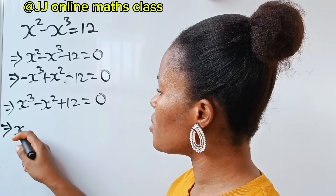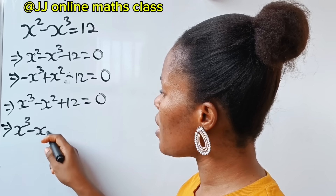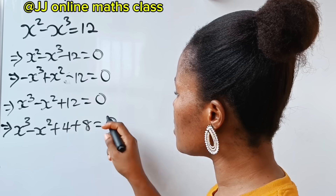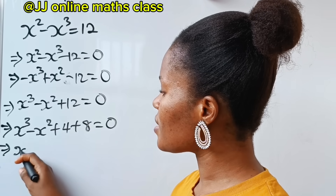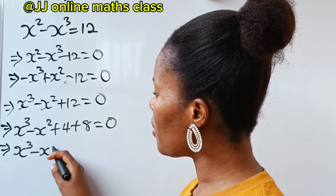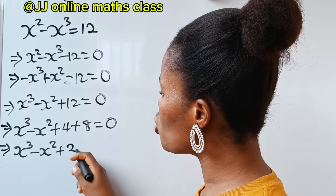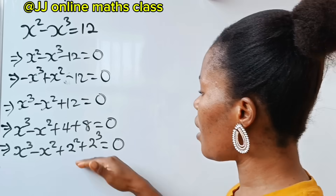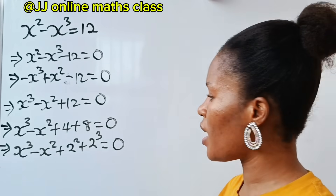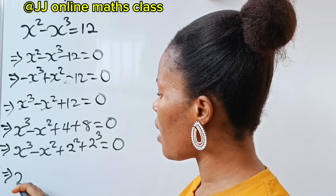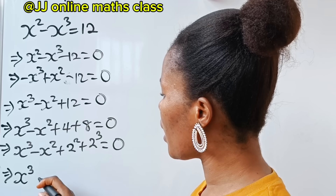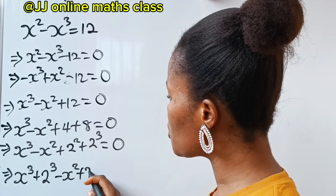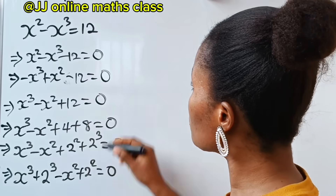So we have x to the power of 3 minus x to the power of 2 plus 4 plus 8 is equal to 0. This implies that x to the power of 3 minus x squared plus 2 squared plus 2 cubed is equal to 0. Now let's collect like terms together. If we do that, we have x to the power of 3 plus 2 to the power of 3 minus x squared plus 2 squared is equal to 0.